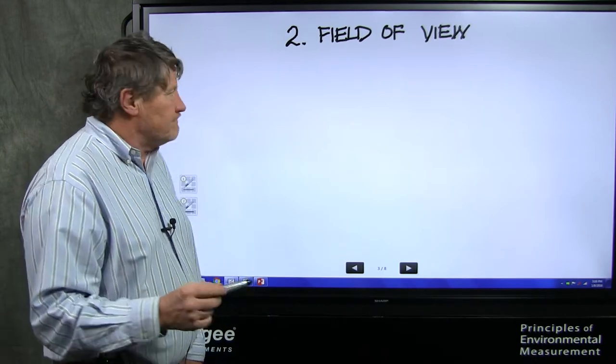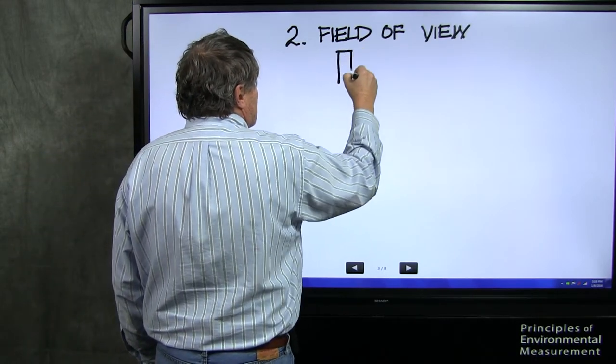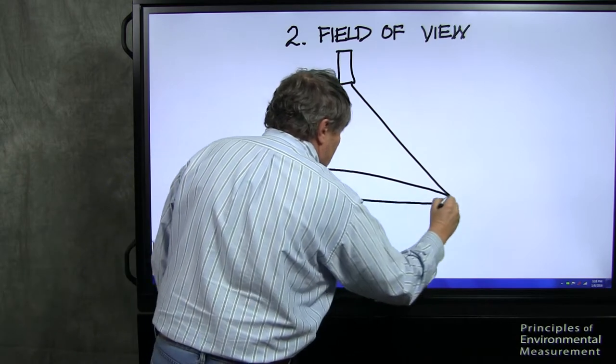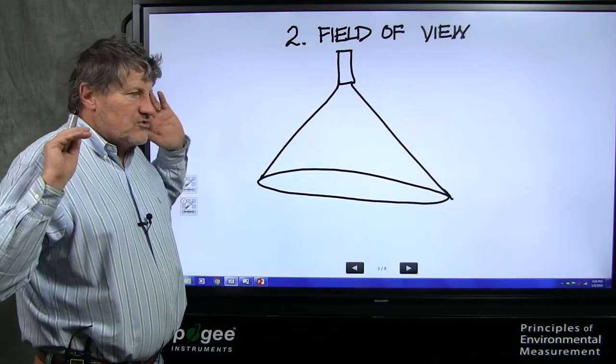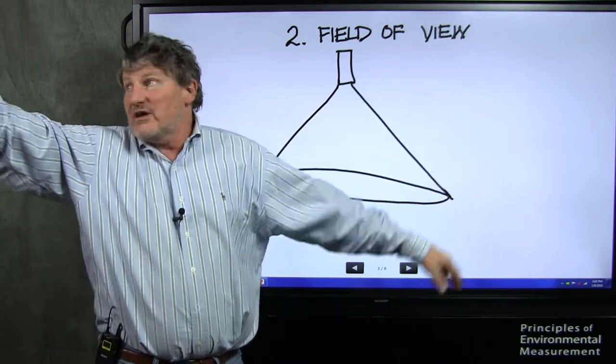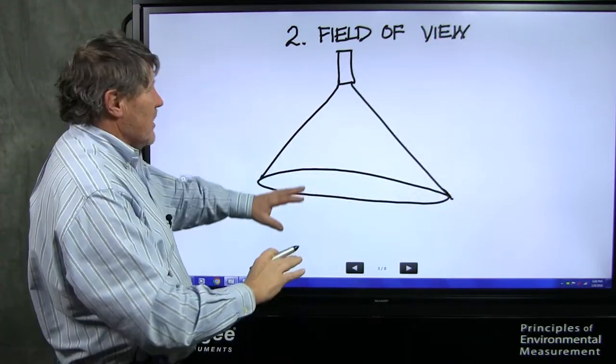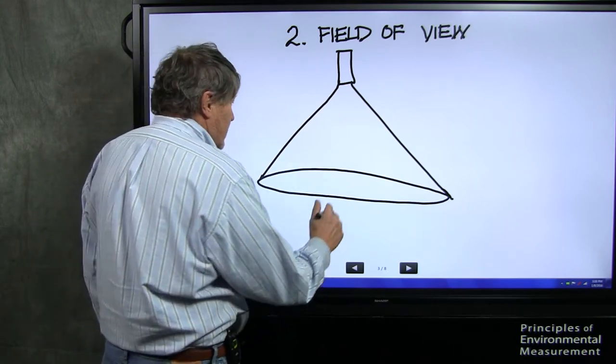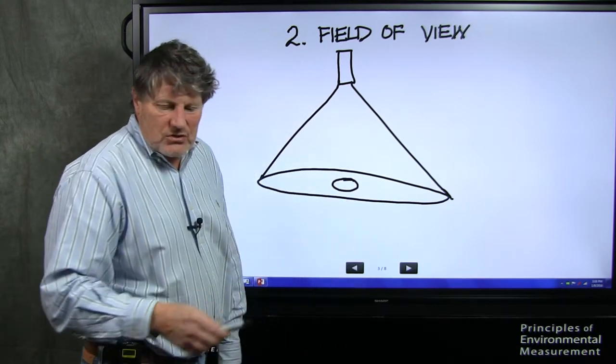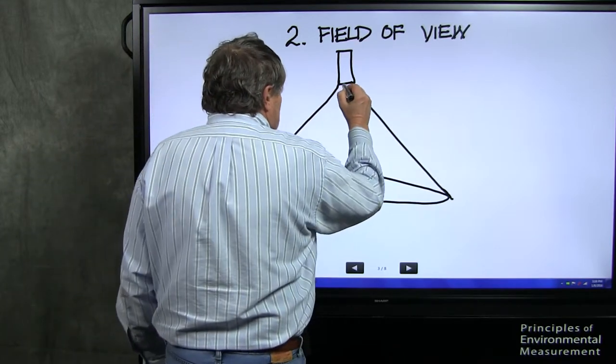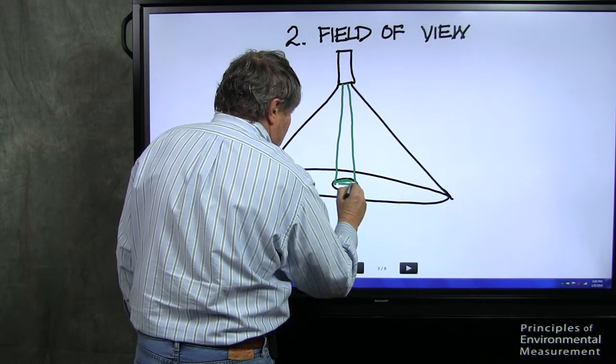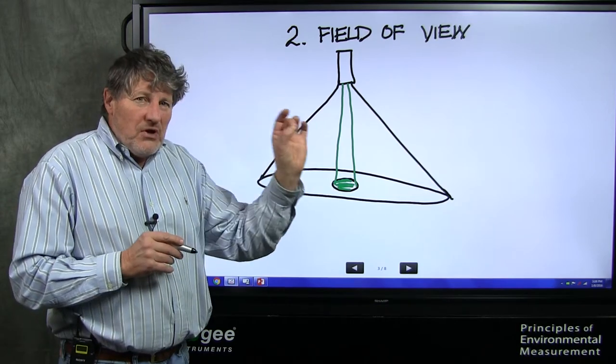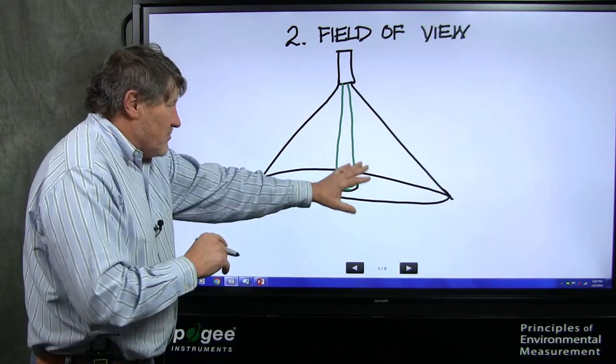Number two, field of view. All of these sensors, if we put a sensor right here, have a cone-shaped field of view. A low cost sensor has an enormous field of view. It sees the edges, it sees the sky, it sees the ground, it averages everything. If you really wanted to average everything, that'd be fine. But typically, what you really want to see is a small area in there. So the Apogee sensors have variable fields of view, but they're typically much tinier, depending on the type of sensor. So you can pinpoint the temperature of a spot rather than average a big area.